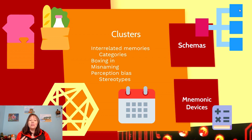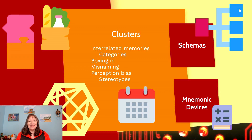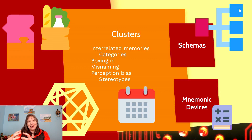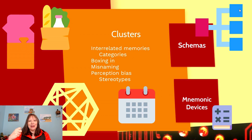You may also call someone by a different name. If you're a parent with multiple children and you've called your child one of their siblings' names, this is due to clustering in the brain. All the kids and all the kids' names are in one category, so when you go to retrieve a name, you access that category but choose the wrong item from it.